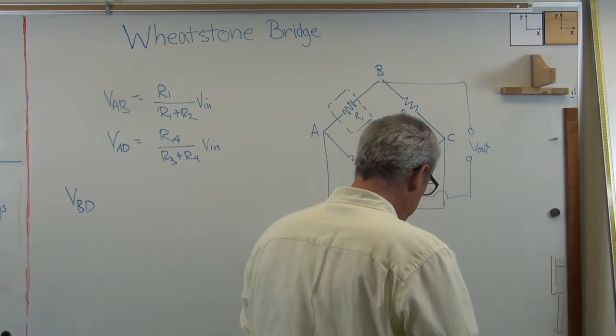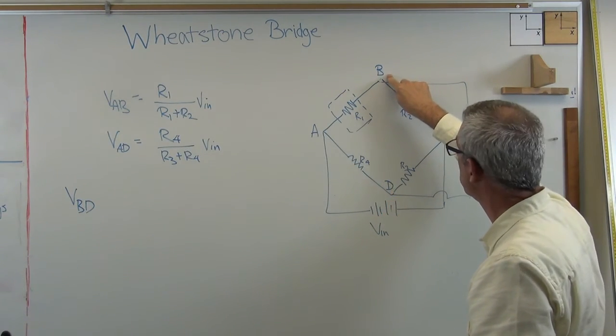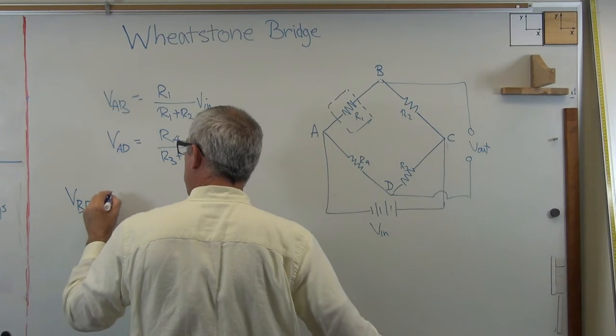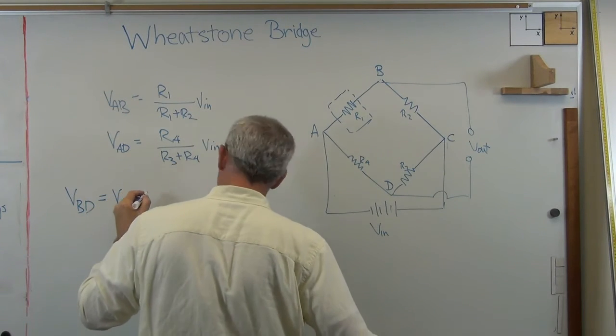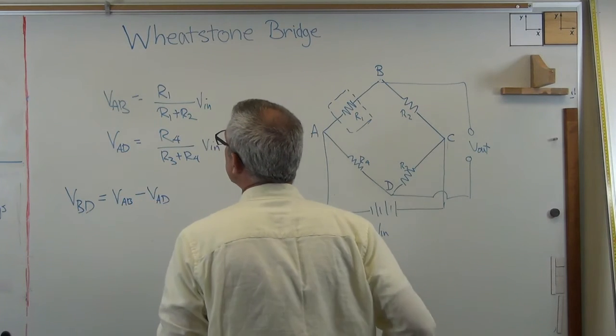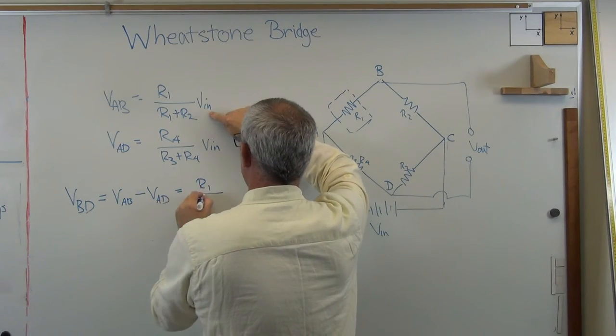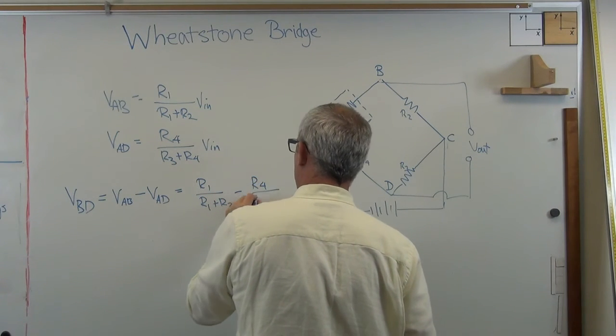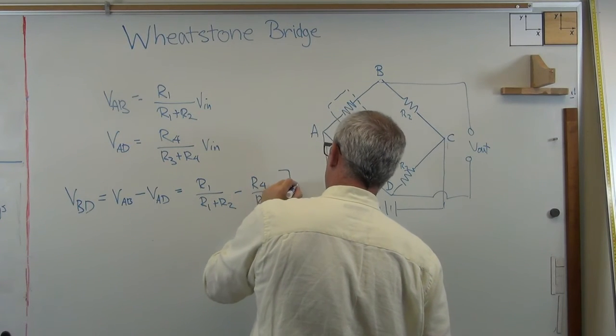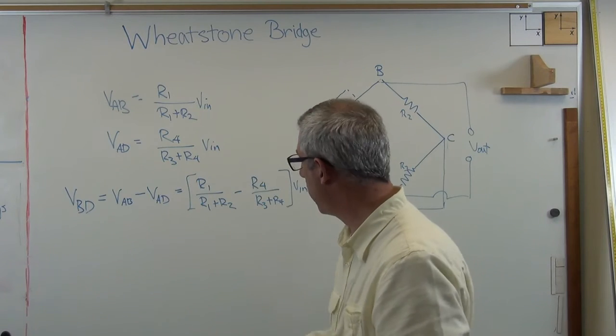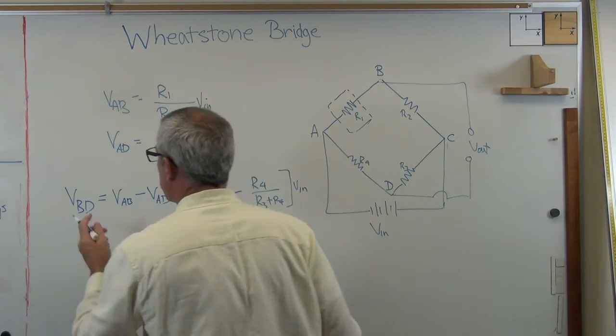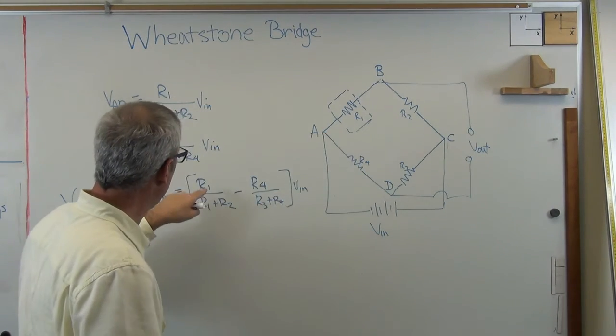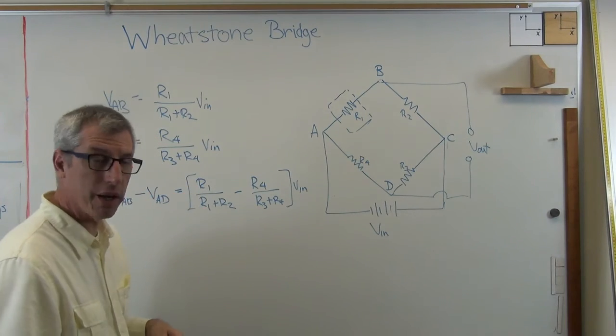Those are the expressions for the voltages across here and across here. Now, the reason I want voltages across that resistor there and the voltages across that resistor there, because I eventually want VBD, V between there and there. And it's just going to be the difference between those two. So VBD, which is the output voltage, is the voltage difference between B and D. Let's see, make sure I do this right. VAB minus VAD. Well, that's VAB right there. So that's R1 over R1 plus R2, minus R4 over R3 plus R4, times Vin.